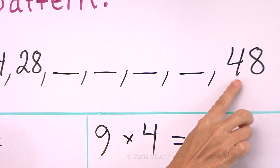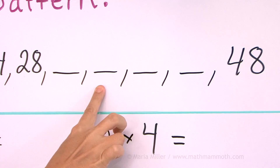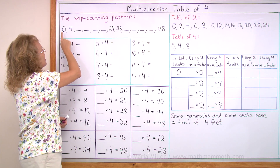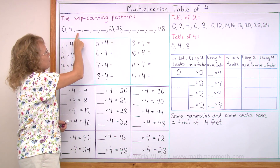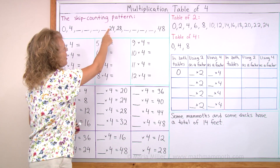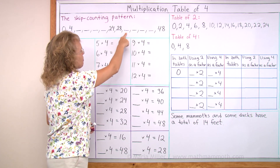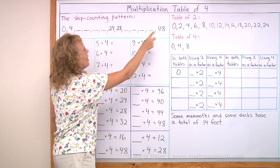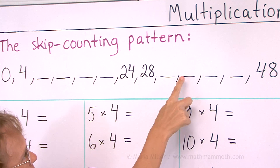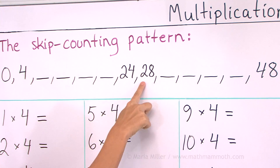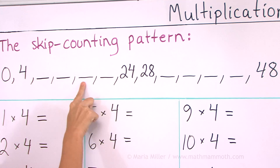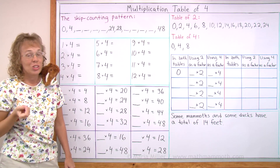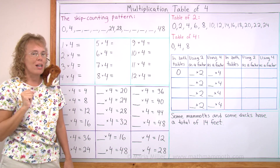Your turn. Now the whole list. 0, 4... 24, 28... and 48. And then backwards. 48, 28, 24, 4 and 0. Don't go on until you master this list. You can pause the video and go backwards to practice some more.